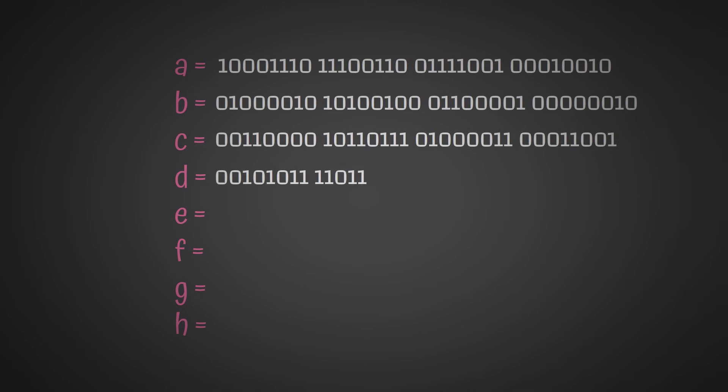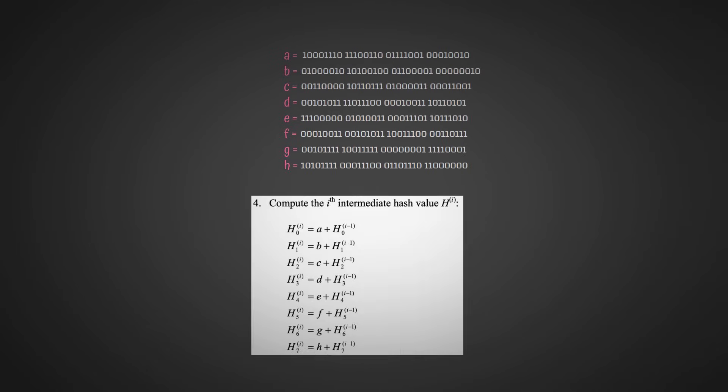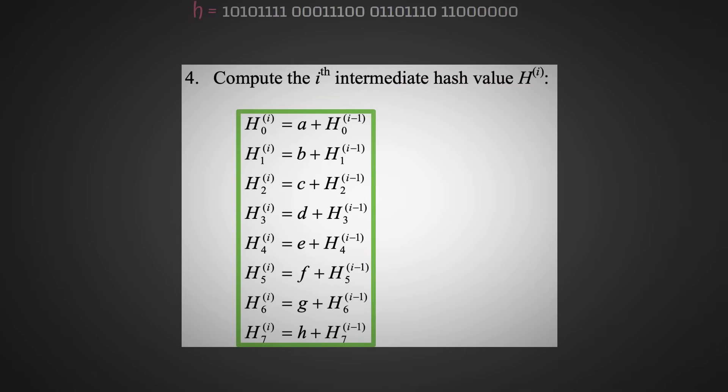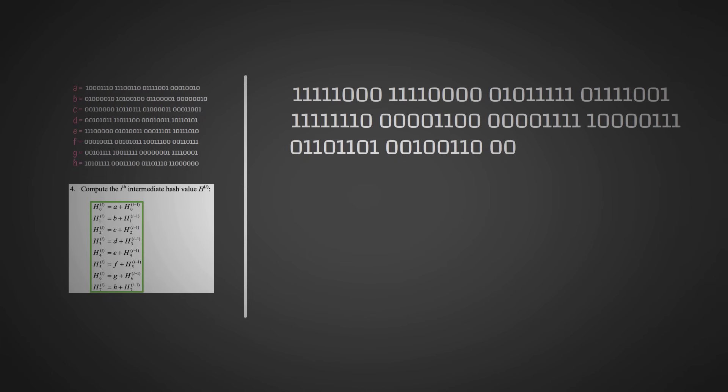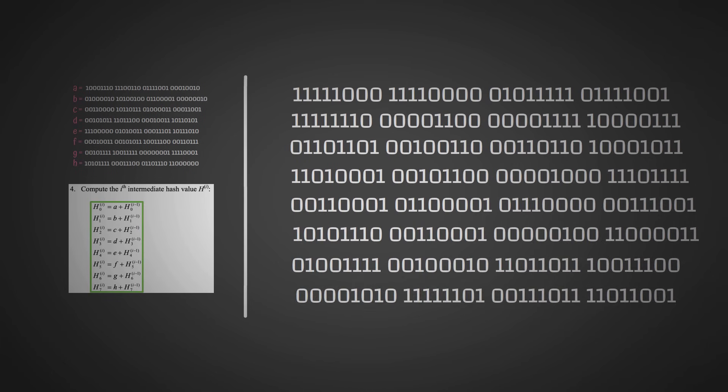After we've run through this for loop, we'll have the values of A through to H equal to these 32-bit numbers here. Then we update our H's, and we do so by adding the A, B, C, D, E, F, G, and H to our original H values. Once we update these H values, we get these 8 32-bit numbers.